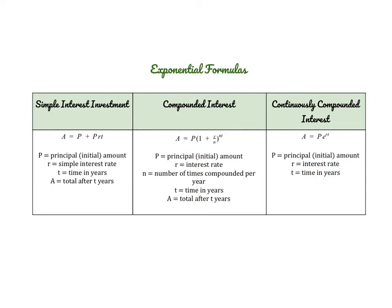The last formula is called the continuously compounded interest formula, and here you'll notice we have base E. Continuously compounding means every single millisecond your investment is earning interest — instead of being compounded twice a year, or 12 times, or 365 times, it's literally being compounded continuously. For that we use base E, which we use for continuous growth. The formula is: A equals P times e to the power of RT. P is your principal, R is your interest rate as a decimal, and T is your time in years.